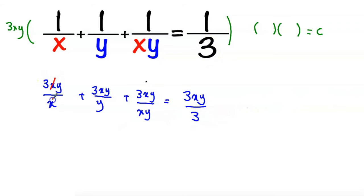x cancels x, y cancels y, xy cancels xy, and 3 cancels 3. So we have 3y plus 3x plus 3 equal to xy.